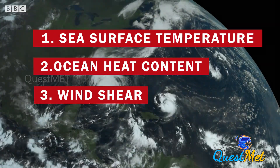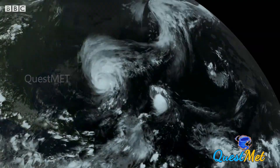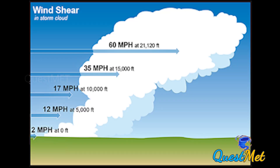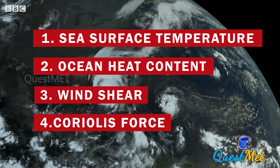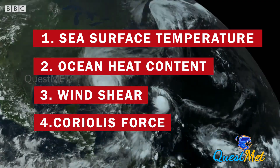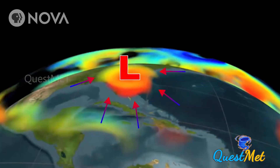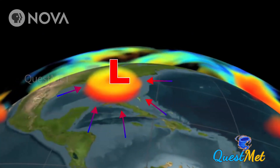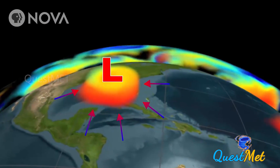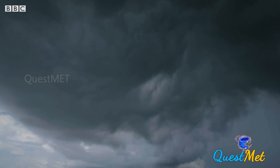Then we have wind shear, defined as the difference in wind speeds between 200 mbar and 850 mbar levels. Ideally, this should be less than 10 knots so that the system can organize. Finally, we have the Coriolis effect, which allows the system to rotate and the atmospheric circulation pattern can form a closed loop.